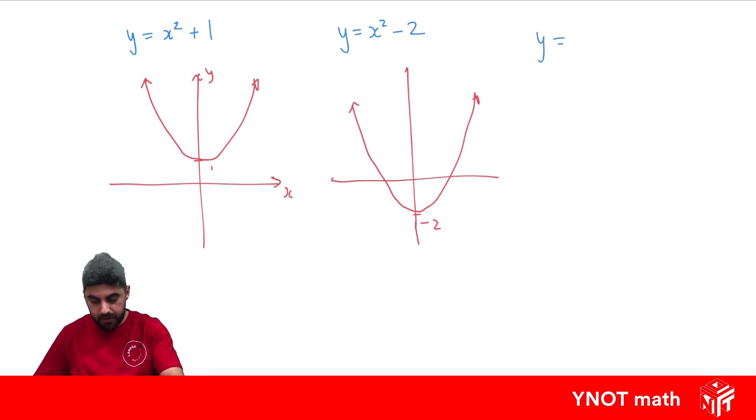If we had y equals minus x squared plus 2, this will just be a concave down parabola shifted up to 2, so we get something like that. We should always label our axis with x and y as well.